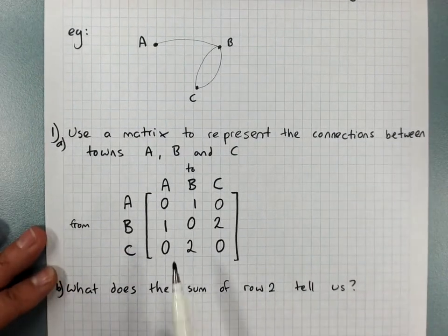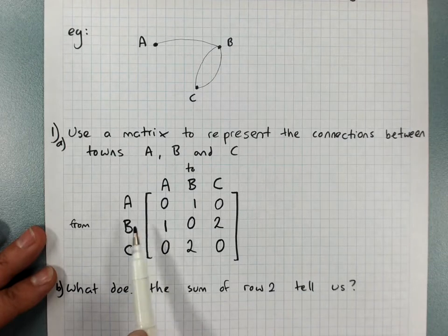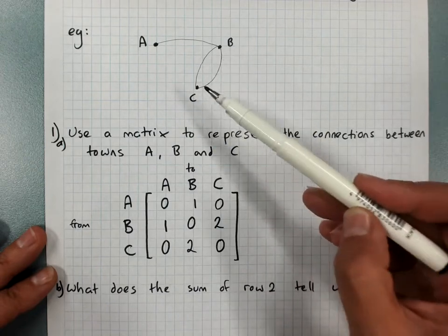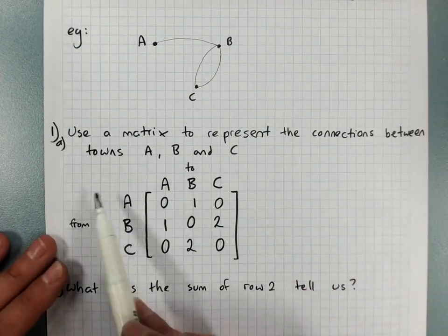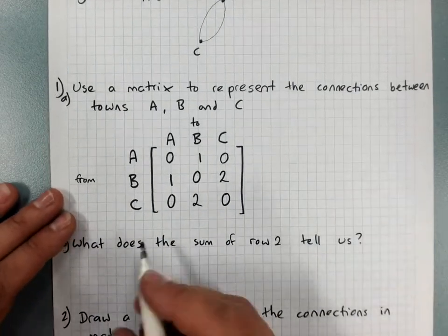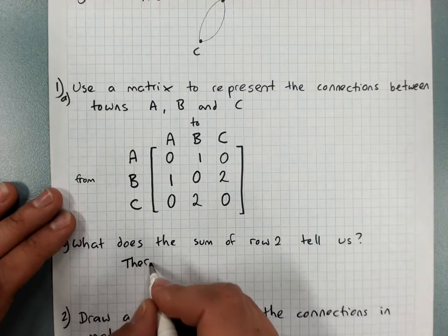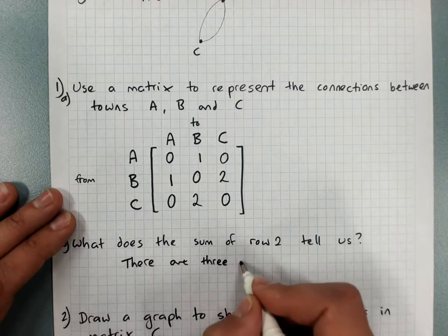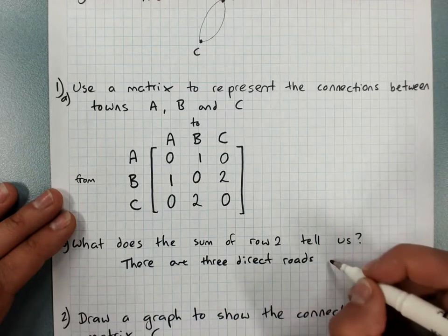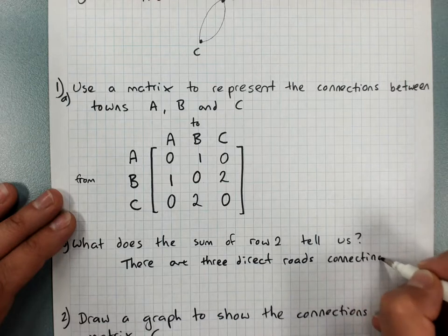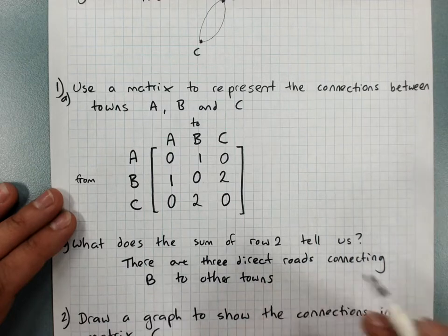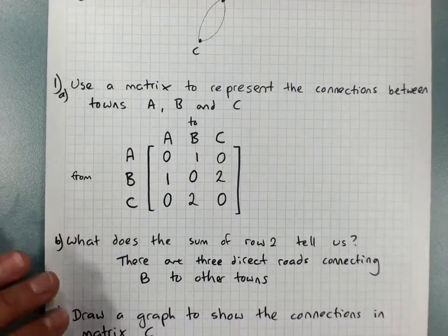What does the sum of row two tell us? If I add it up, row two, one plus zero plus two is three. That says there's three direct roads leading into B or from B. Either way is fine. There are three direct roads connecting B to other towns.